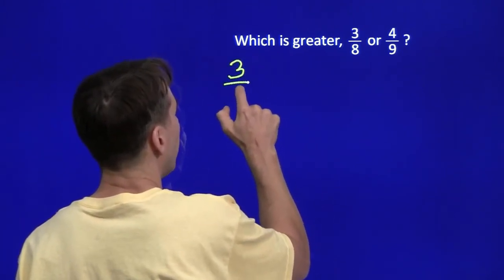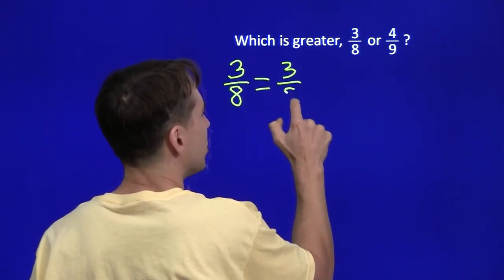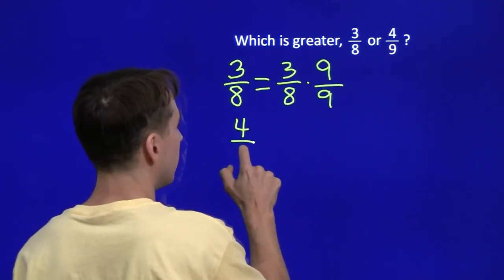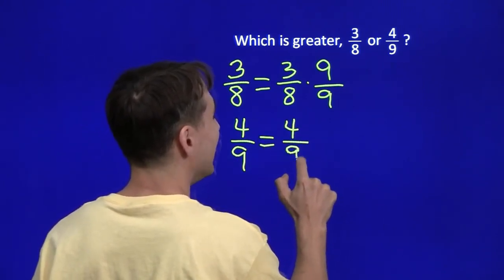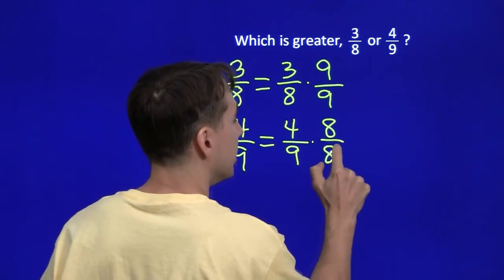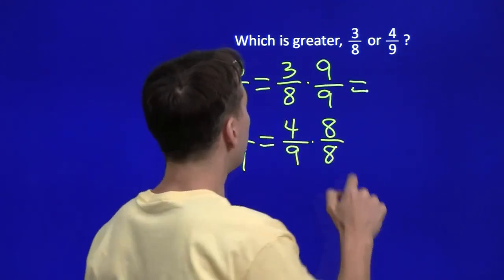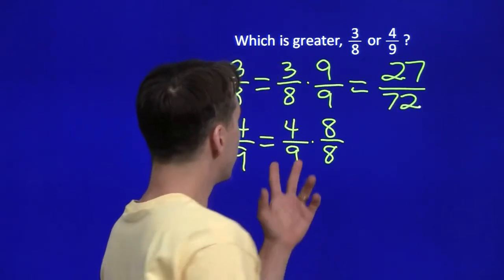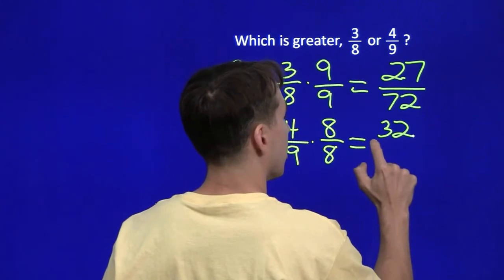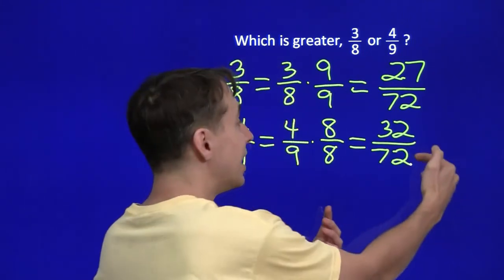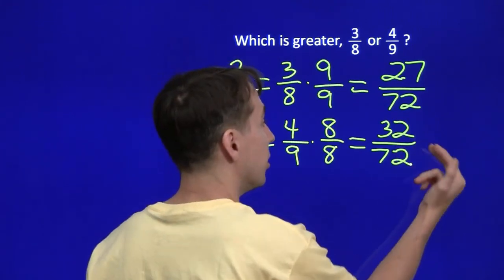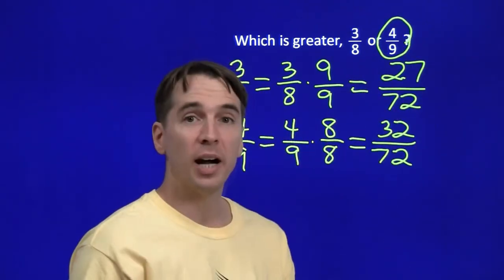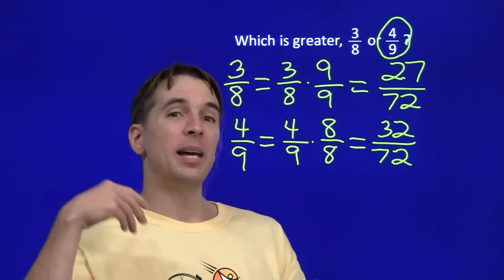So I'll take three-eighths and strategically multiply by nine over nine, and take four-ninths and multiply by eight over eight. The numerators become three times nine equals 27, and four times eight equals 32, both over a denominator of 72. As planned, the denominators are the same, so now we can compare them. We can see that 32 is greater than 27, so four-ninths is greater than three-eighths. Now we have our strategy for comparing any two positive fractions: just make the denominators the same, and then we're done.